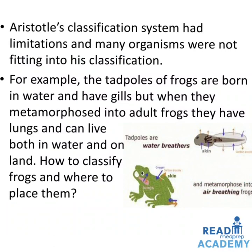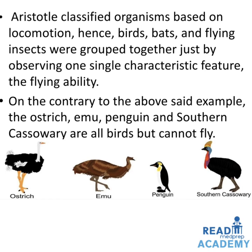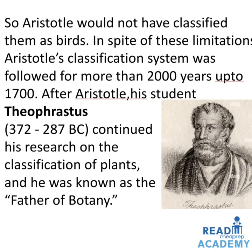Aristotle's classification system had limitations — many organisms did not fit. For example, tadpoles are born in water and have gills, but when they metamorphose into adult frogs, they develop lungs and live both in water and on land. Aristotle classified organisms based on locomotion, so birds, bats, and flying insects were grouped together based solely on flying ability. Conversely, the ostrich, emu, penguin, and southern cassowary are all birds but cannot fly, so Aristotle would not have classified them as birds. Despite these limitations, Aristotle's system was followed for more than 2,000 years, up to the 1700s.